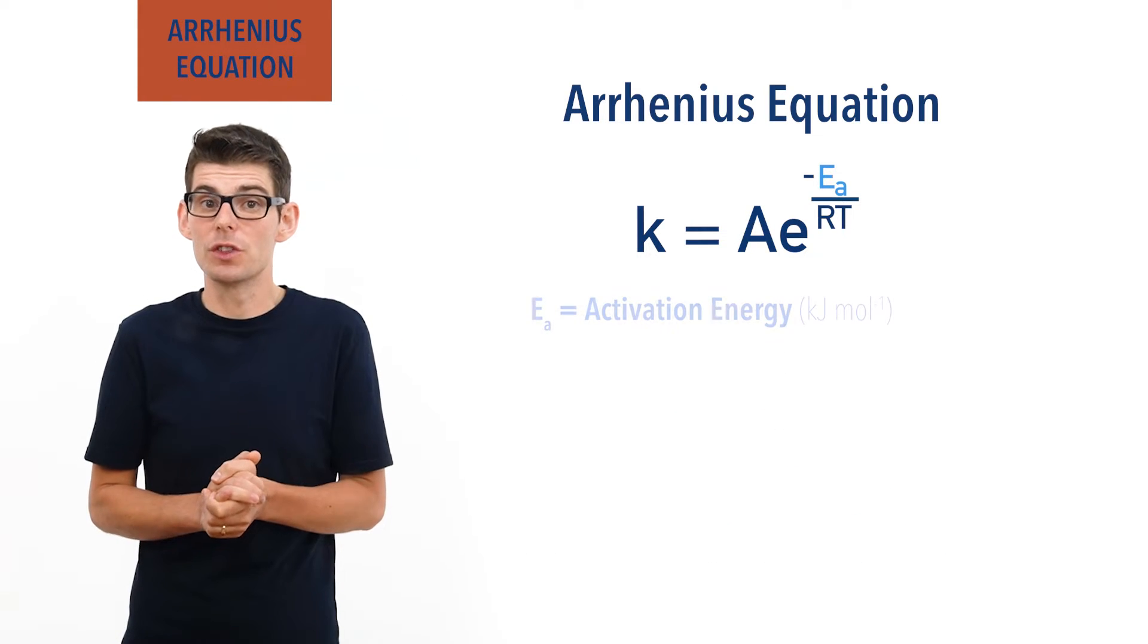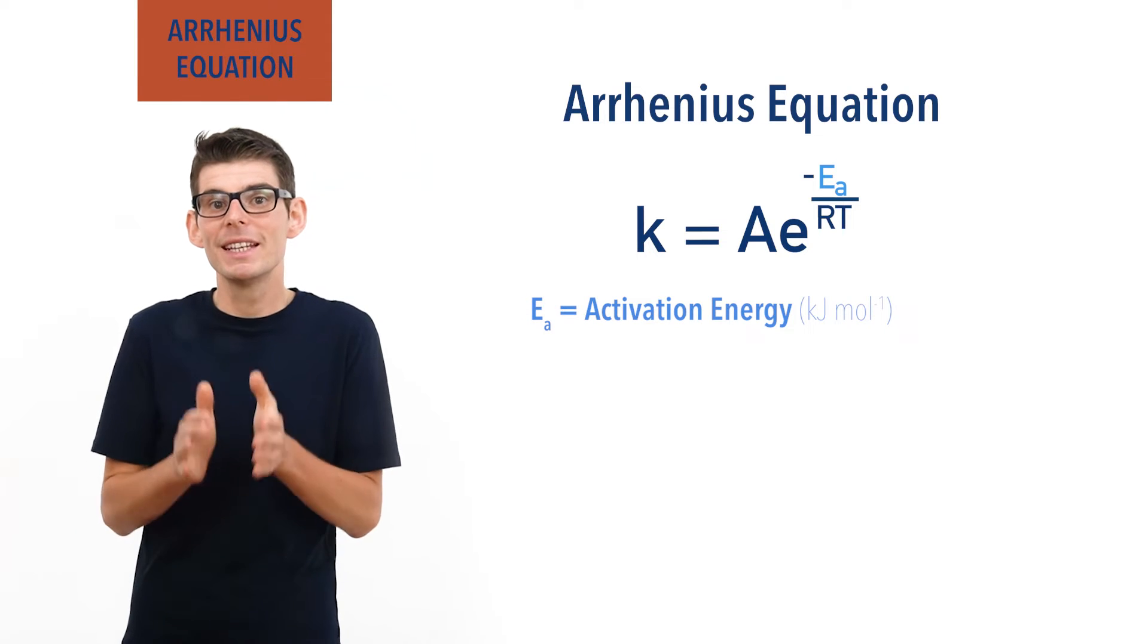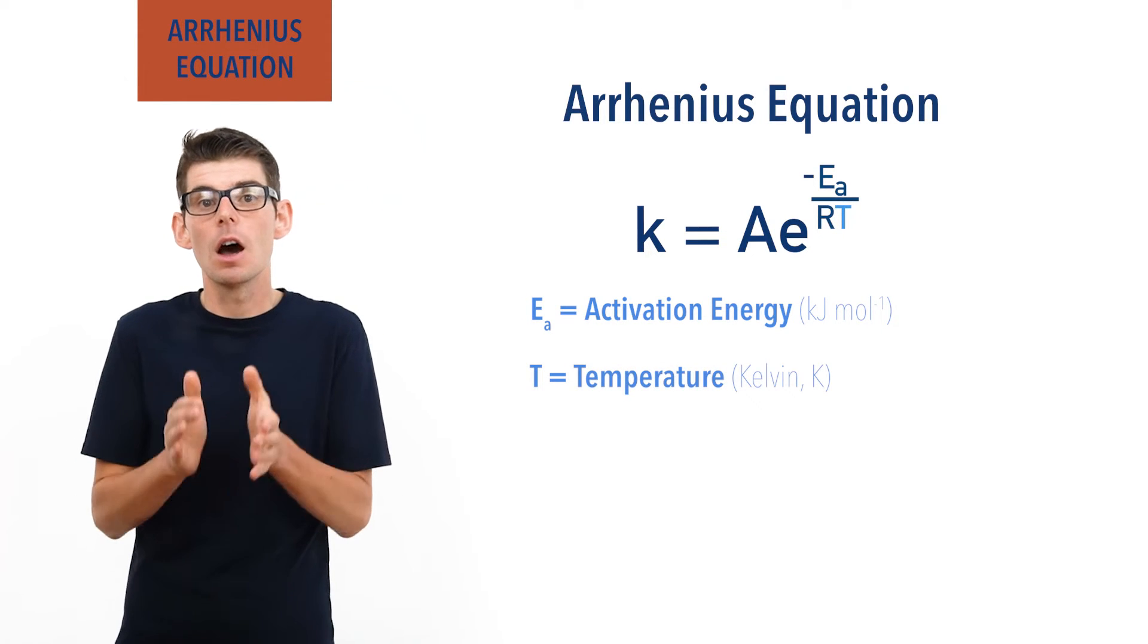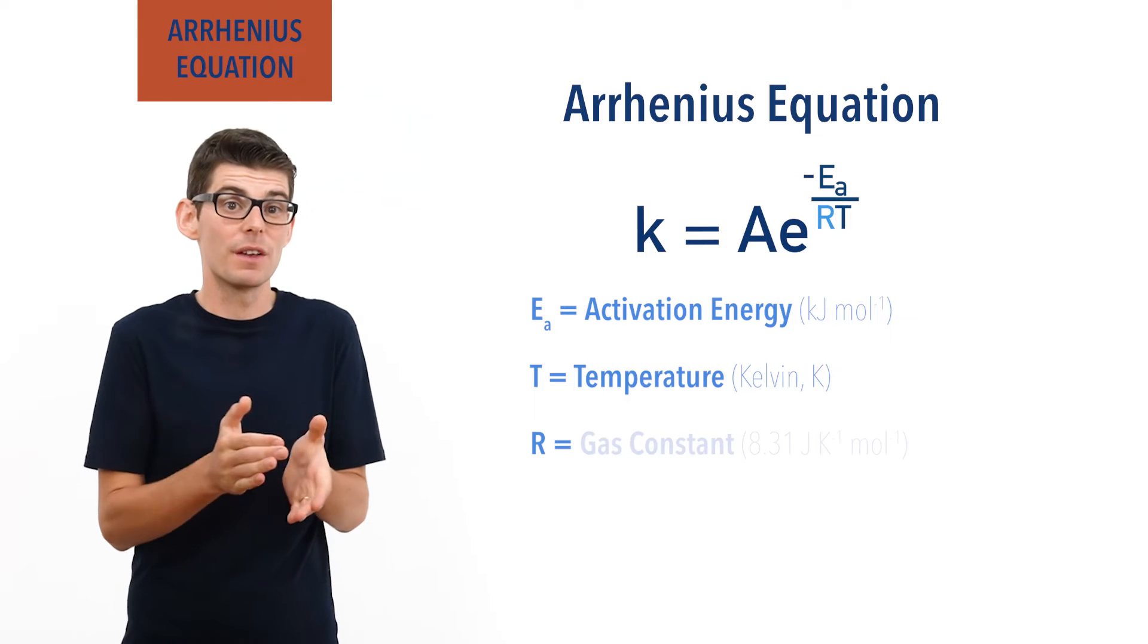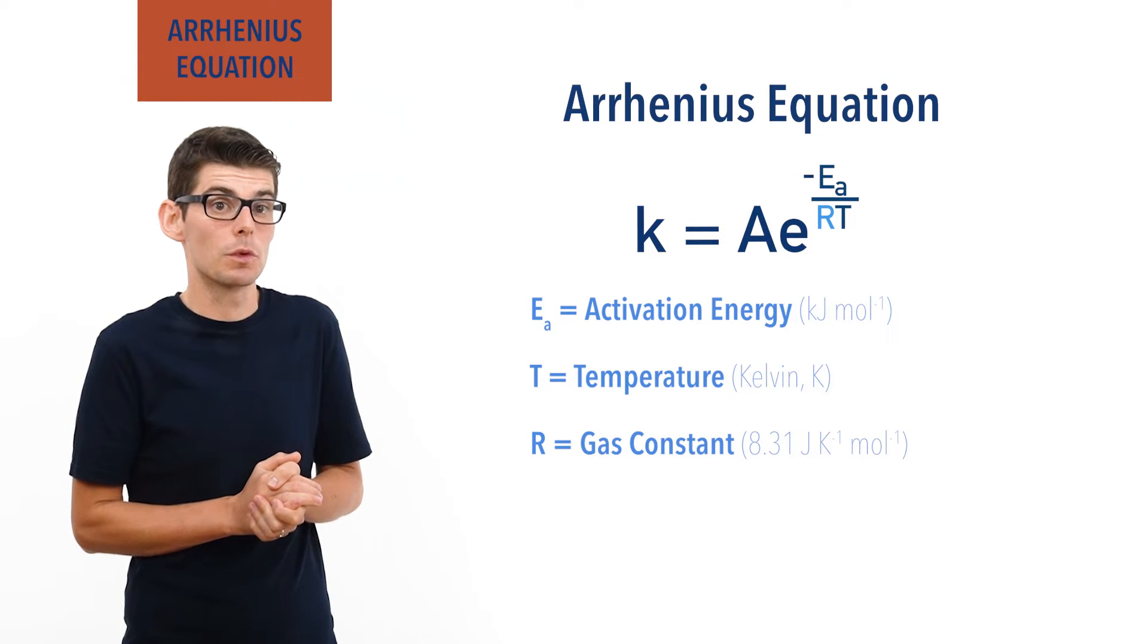Ea is activation energy in kilojoules per mole, T is temperature in Kelvin, R is the gas constant, a fixed value of 8.31 joules per Kelvin per mole.